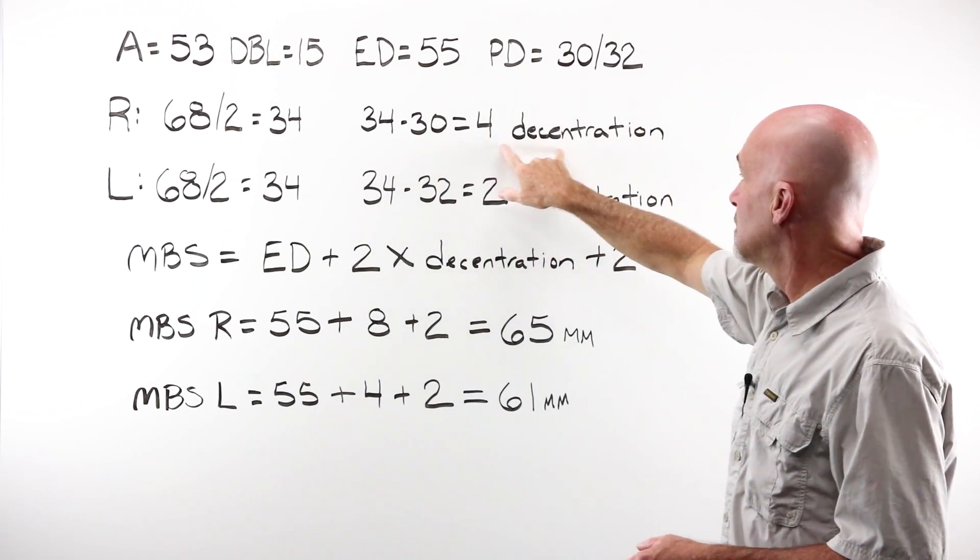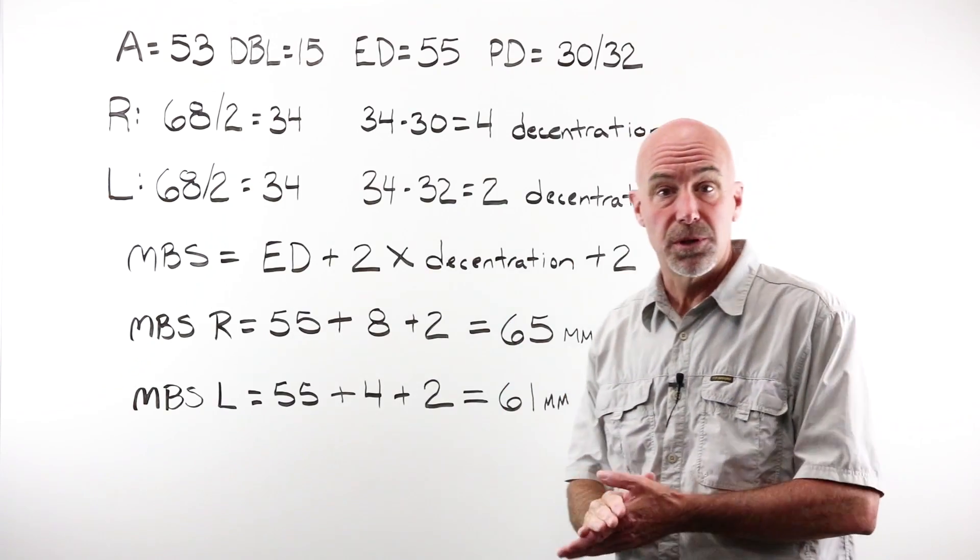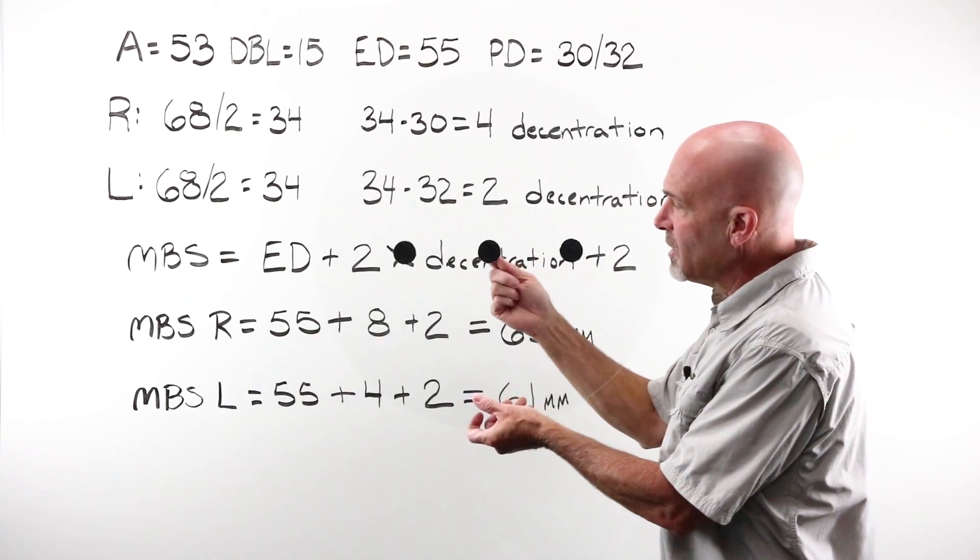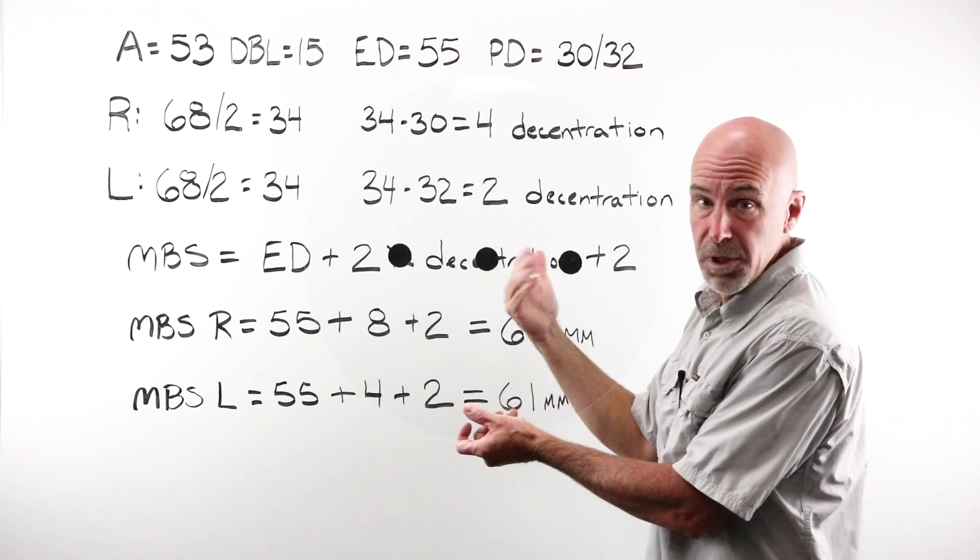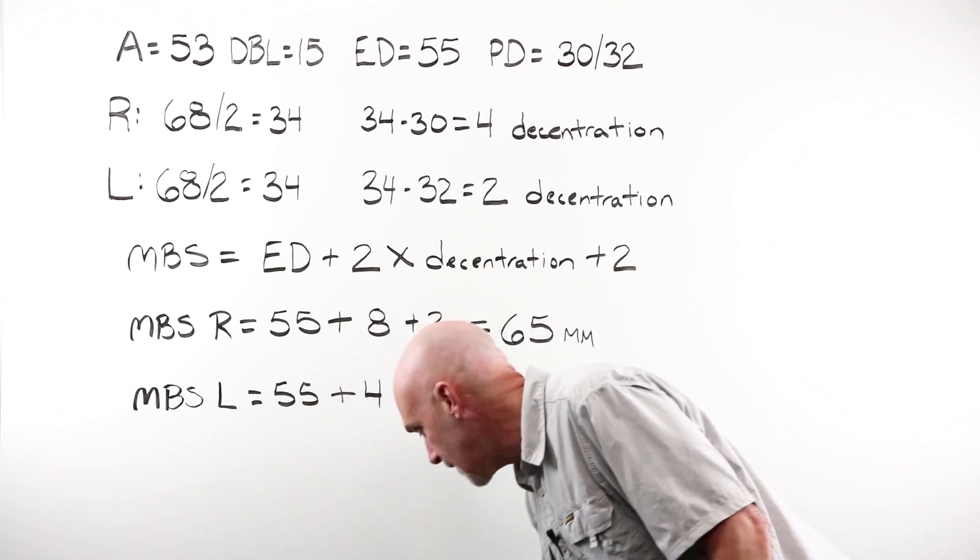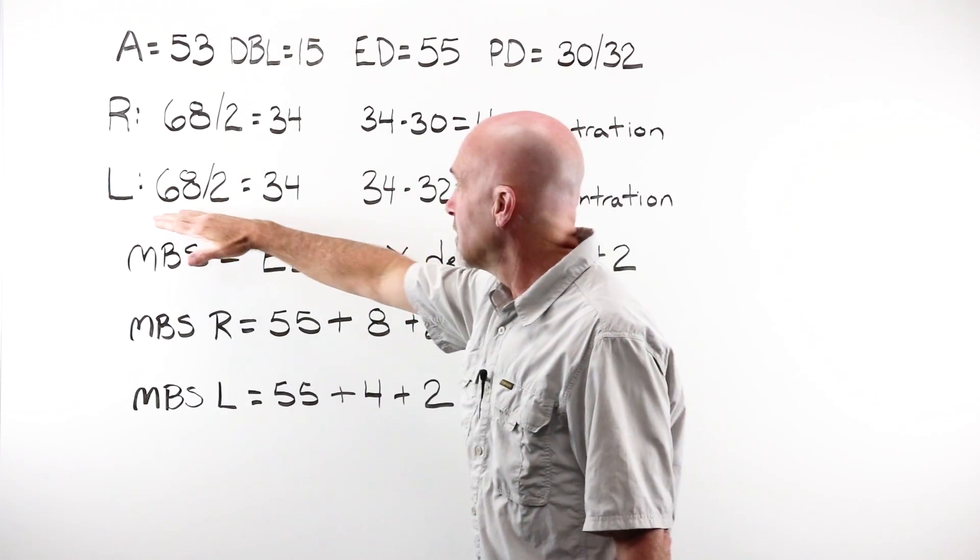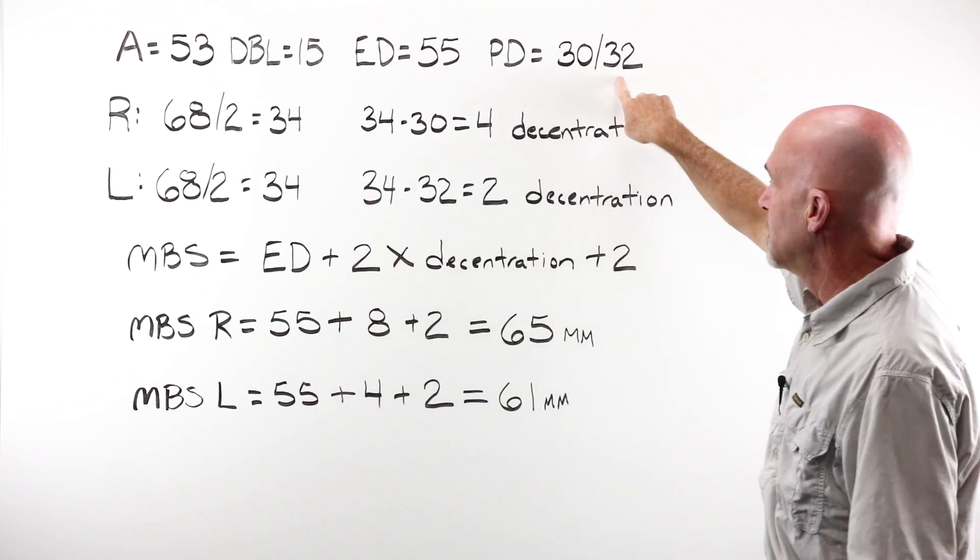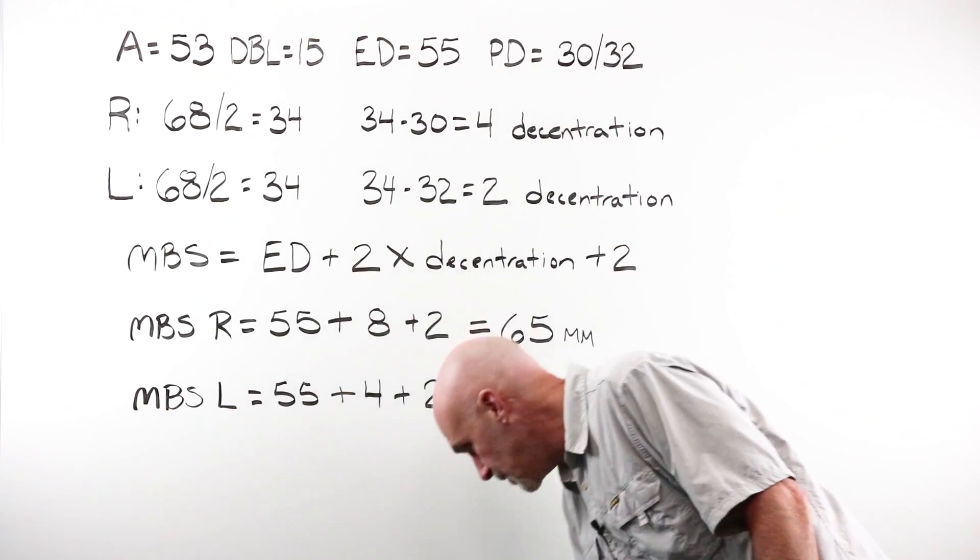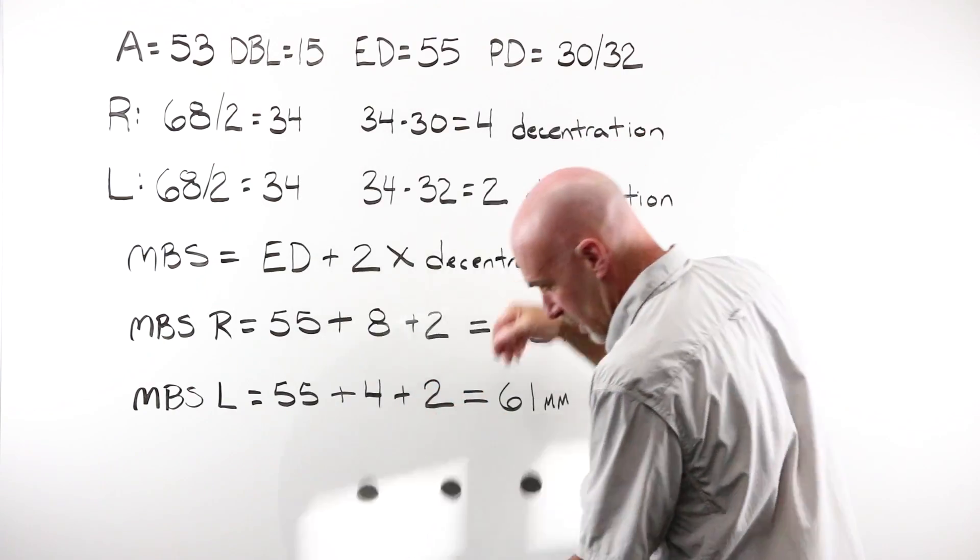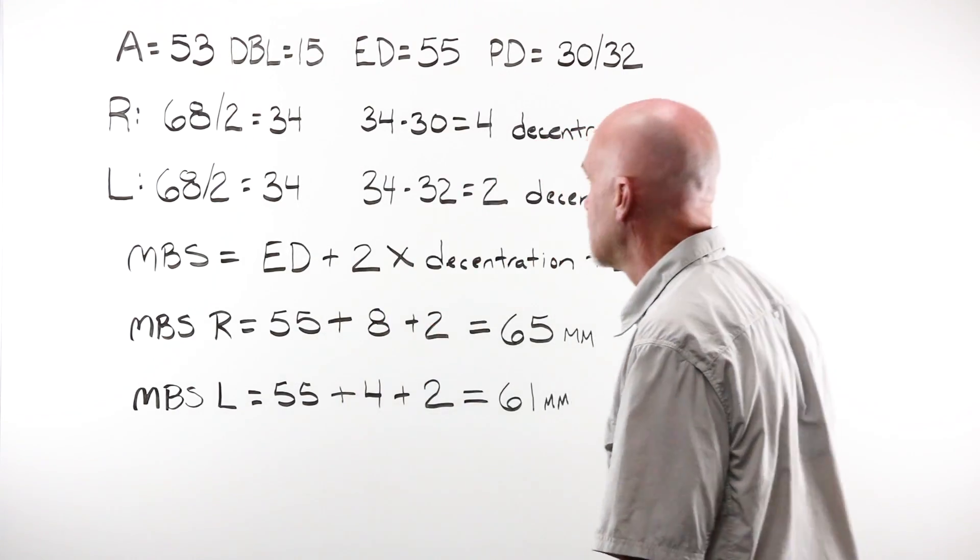My patient PD on my right is 30. 34 minus 30 gives me four millimeters of decentration. I'm gonna move my lens OC over four millimeters so that it's in front of the wearer's eye in the right place. For my left, I've got 68 divided by two. 34-34 minus 32 gives me two millimeters of decentration. On the left, I'm gonna move my OC over two millimeters to be in front of their eye in the right place.